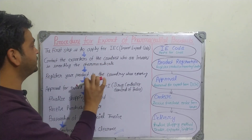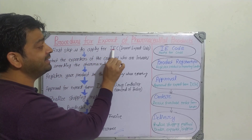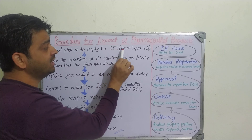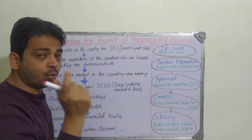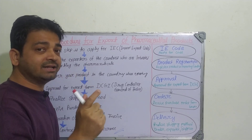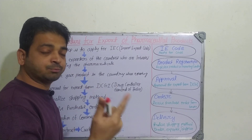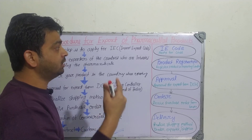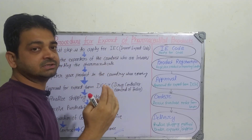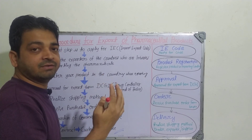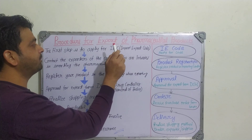The first step is to apply for IEC — Import Export Code. There will be one code number which will be uniquely identified for that particular exporter or importer. This unique number gives identification for that particular product of that particular company. So that code has to be applied first.